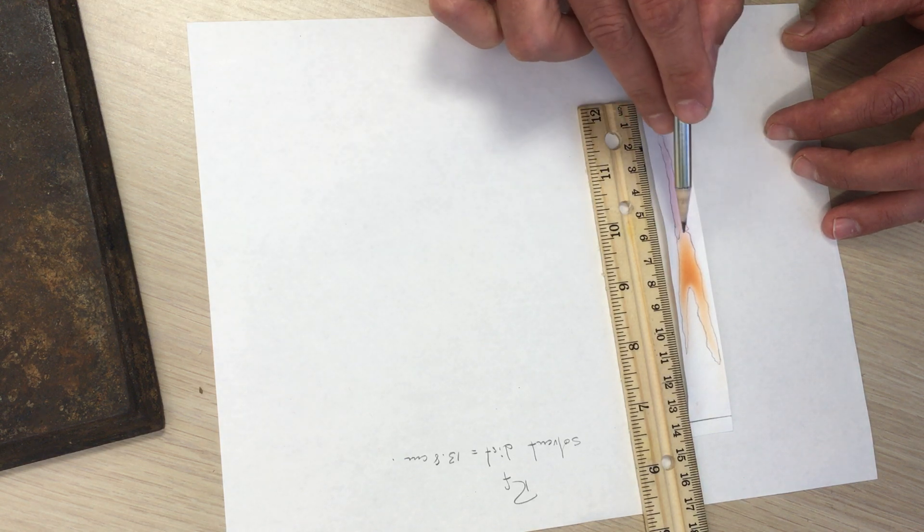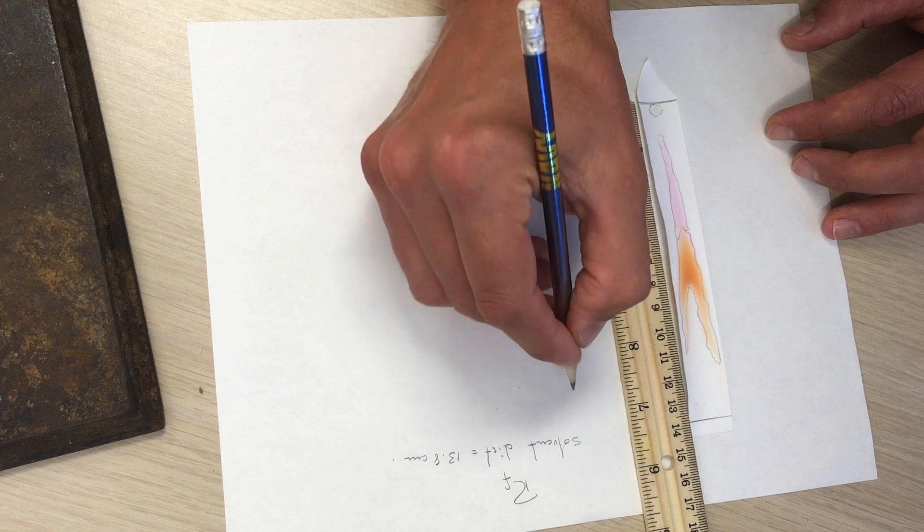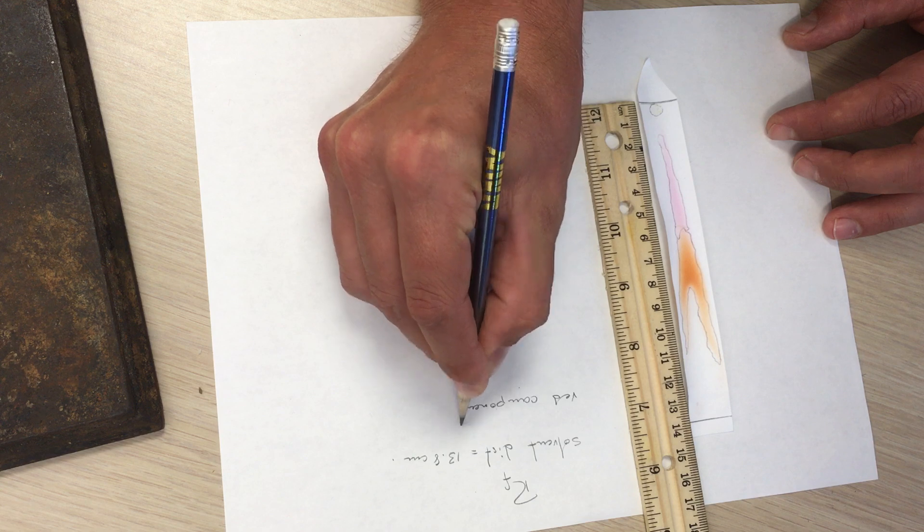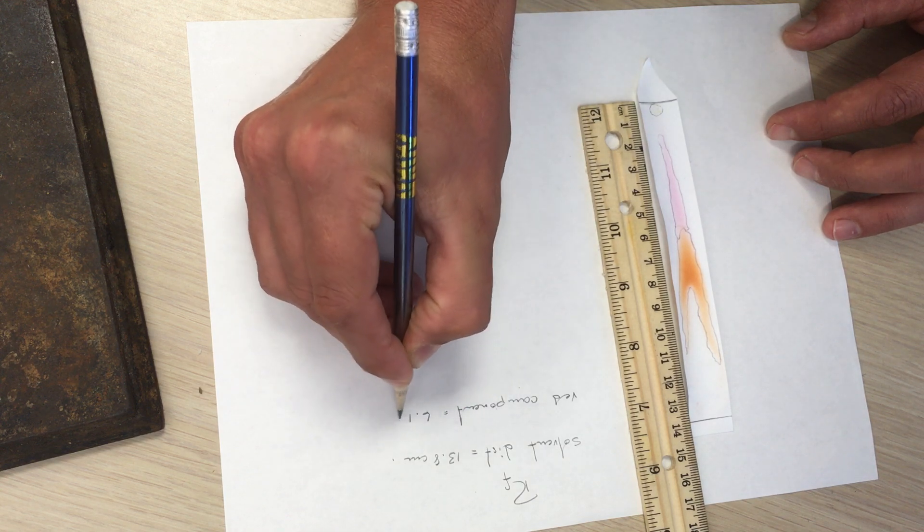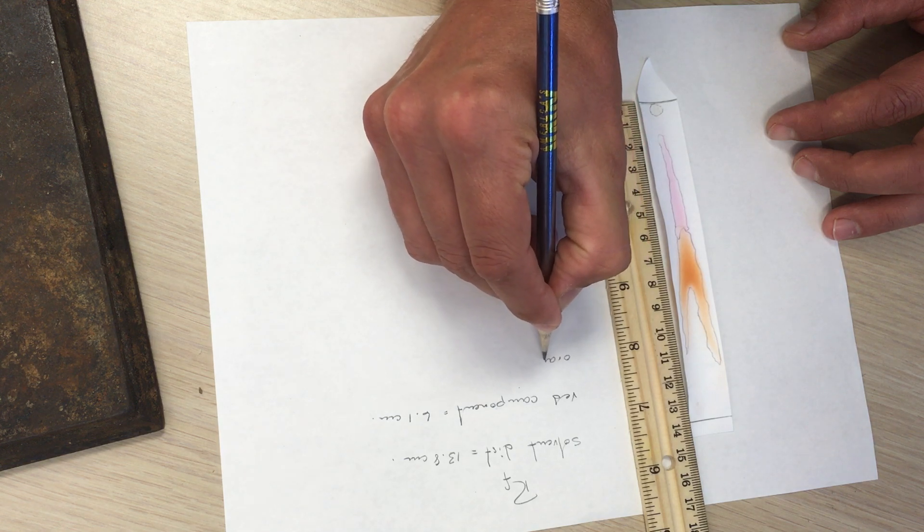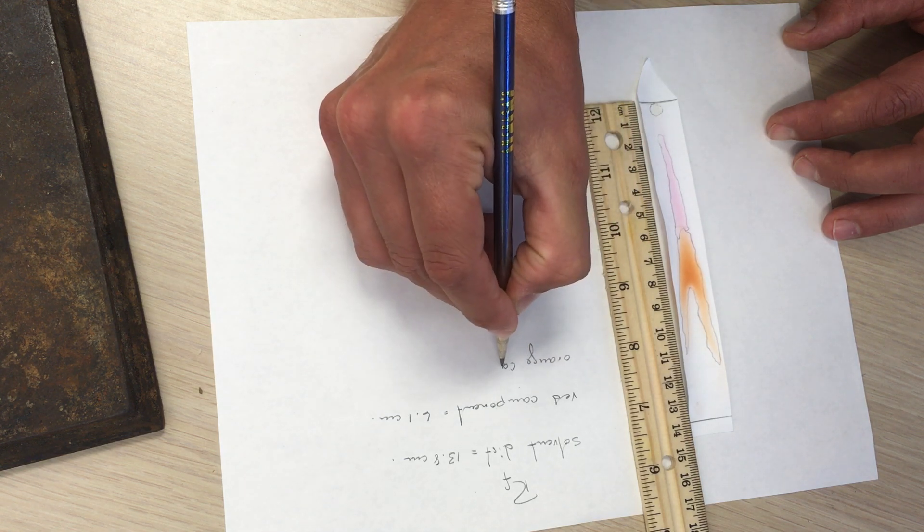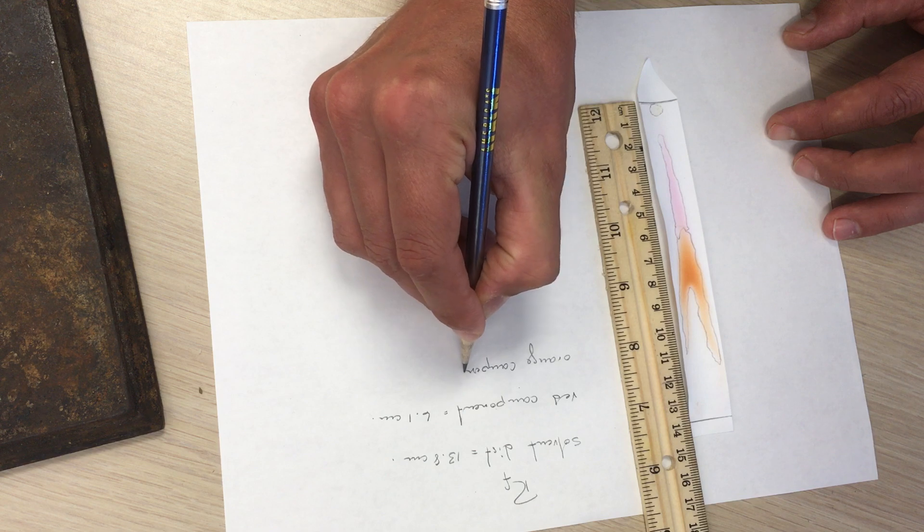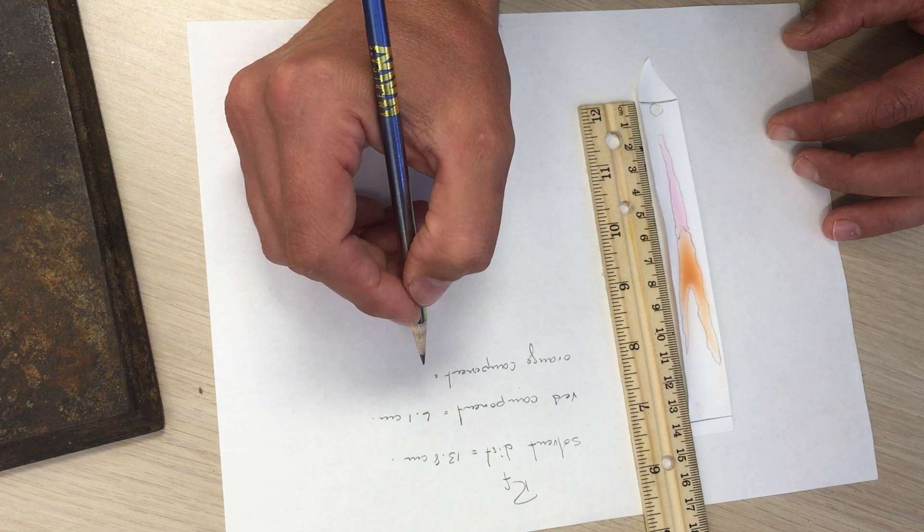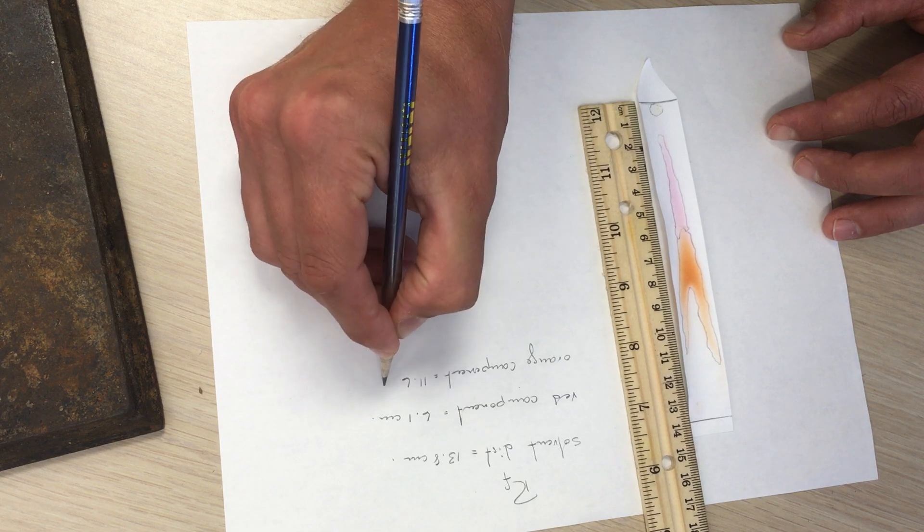So there's a red component that traveled to about 6.1 centimeters and the orange component to about 11.6 centimeters.